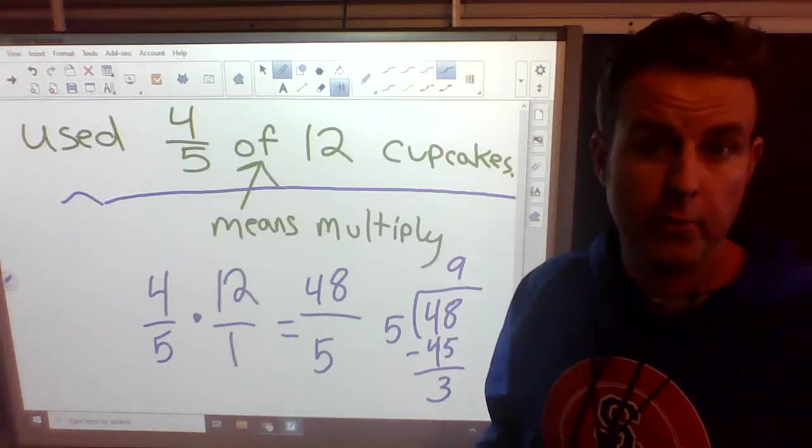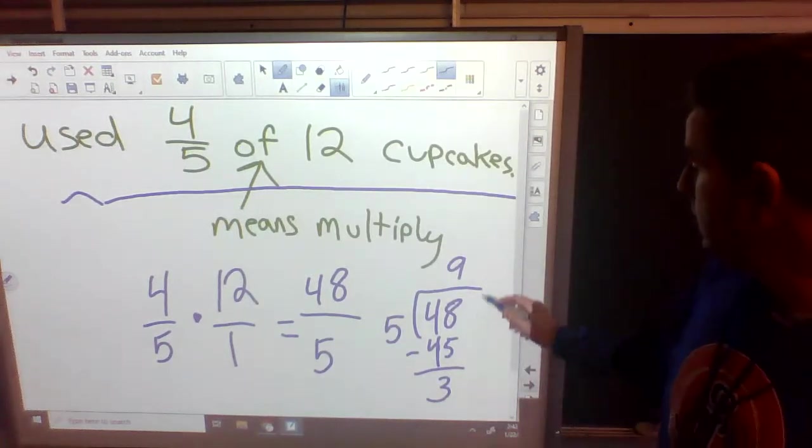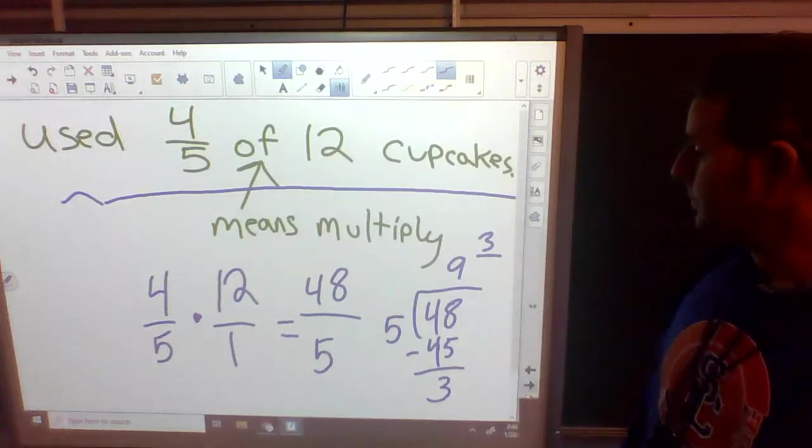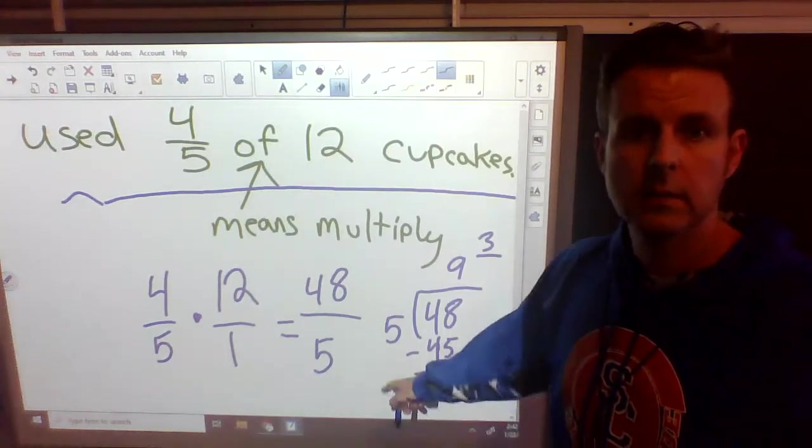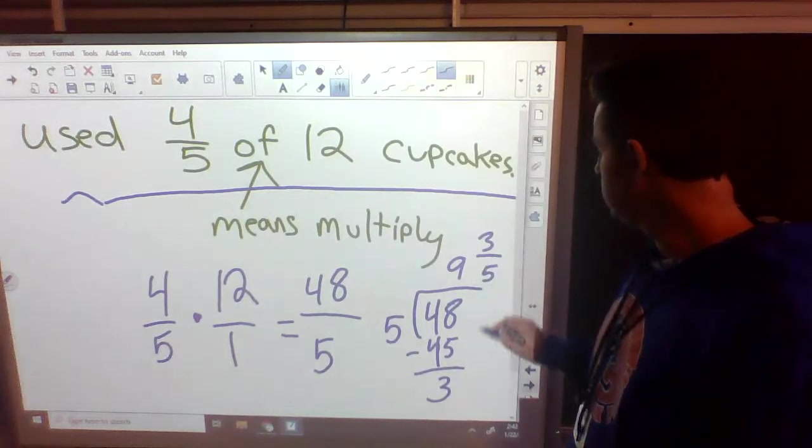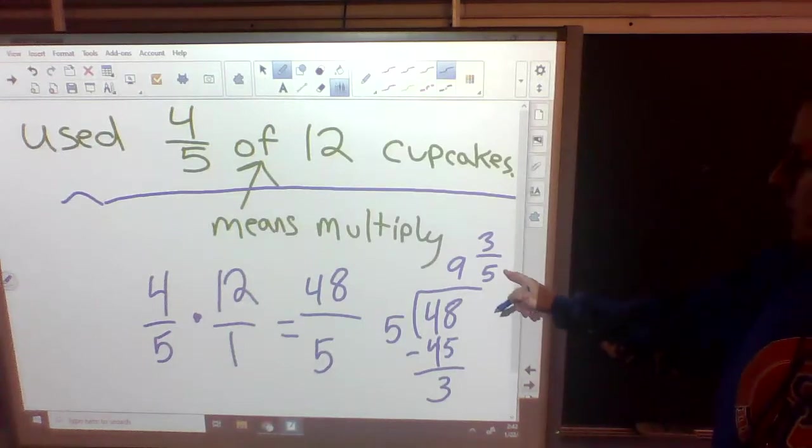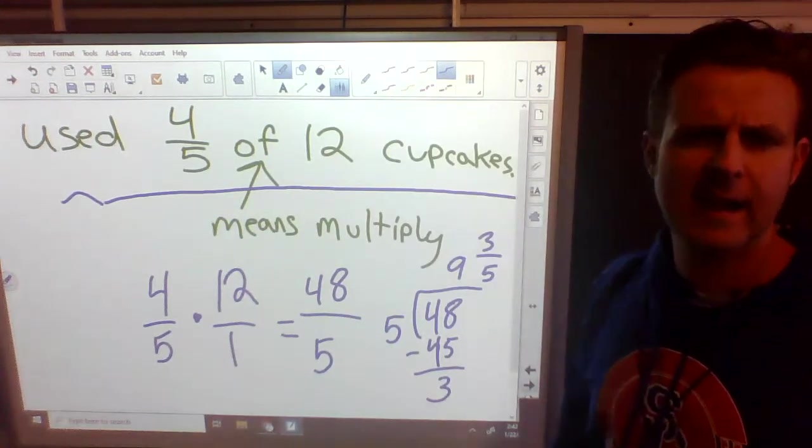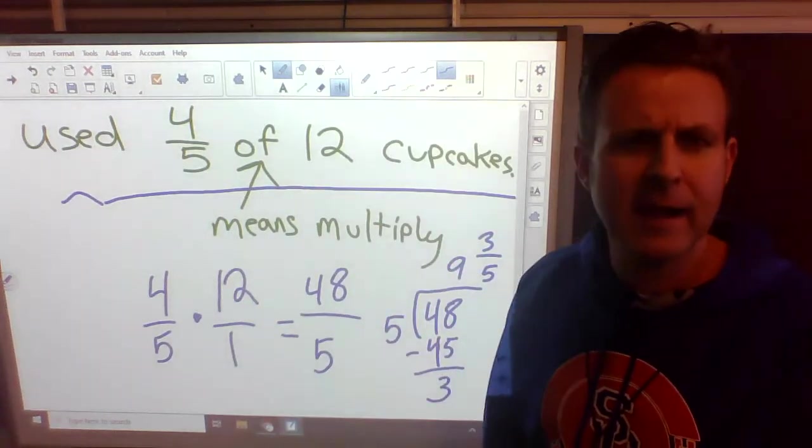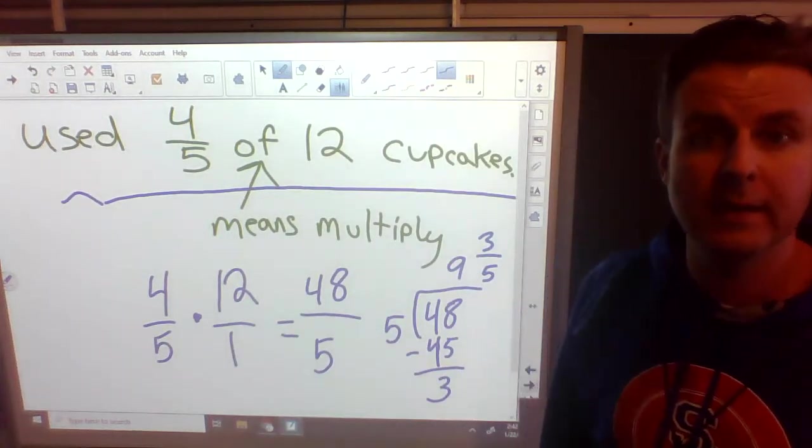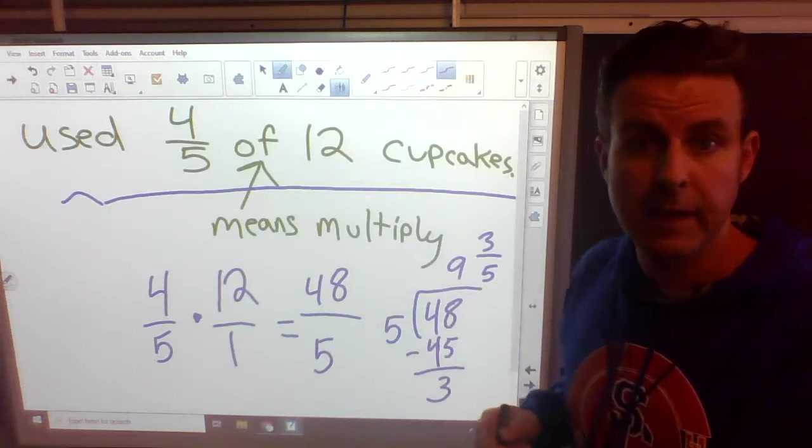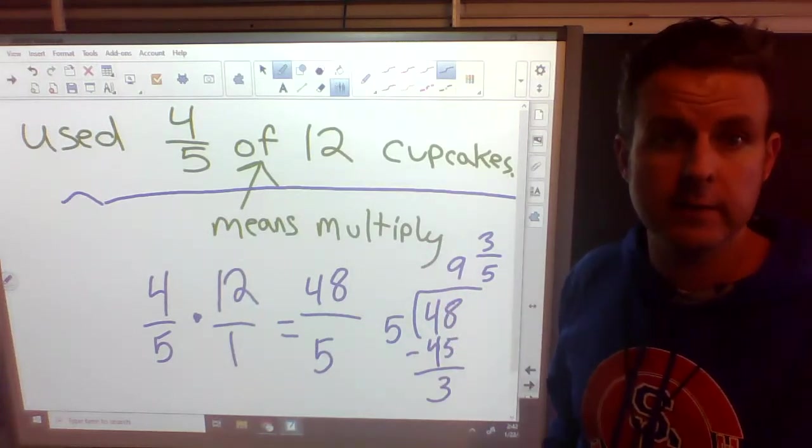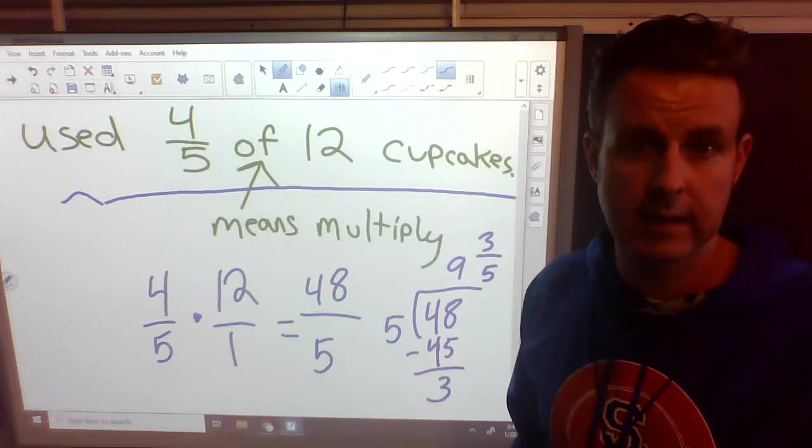We subtract. We're left with 3. 3 what? 3 pieces of an apple that we didn't use. So we put that 3 up top. Over what? Over our 5. So what did we use? We used 9 and 3 fifths cupcakes. I think I said apples earlier, but it's cupcakes. 9 and 3 fifths cupcakes is what we end up eating. Out of the 12 cupcakes, we ate 9 and 3 fifths of them because that's what 4 fifths of 12 is.